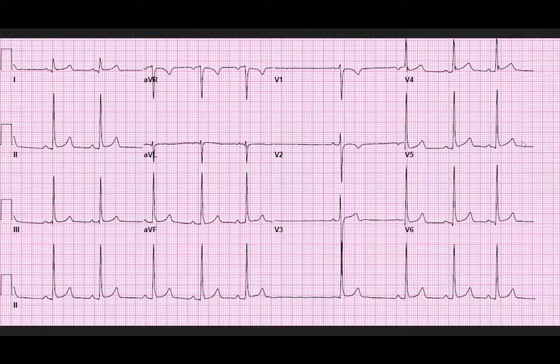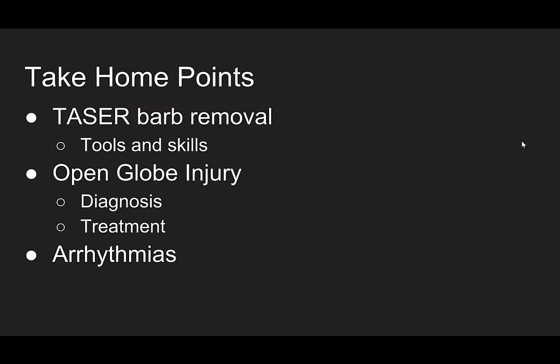Our take-home points for this case: taser barb removal — you will see this, this is actually pretty common. You want to have the tools to do it. I use a laceration kit, an 11 blade, and lidocaine if I need it. Remember to grab that barb as close to the skin as possible and remove completely perpendicular. For open globe injuries, you can diagnose it on exam with that irregularly shaped pupil or with Seidel's sign. Do not check the intraocular pressures on these patients. You want to get a CT scan or use ultrasound to look for foreign body.